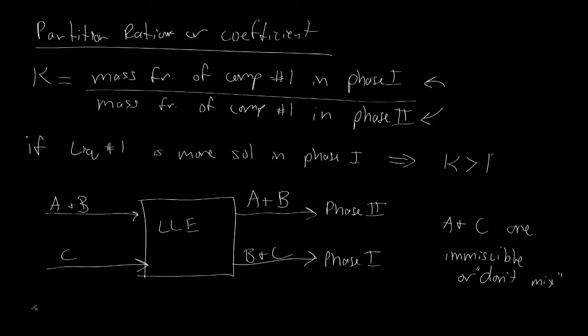Mathematically, we would write KB as equal to the mass fraction of component 1 in phase 1, in this case component 1 would be component B, divided by the mass fraction of component 1 in phase 2. So we would write this as XB as the mass fraction in phase 1 divided by XB phase 2, and the superscripts denote here that it is which phase it is in.